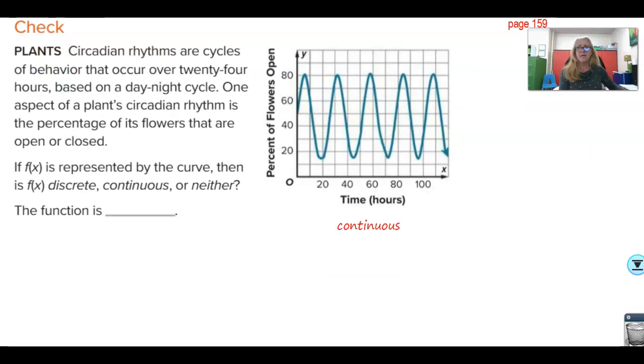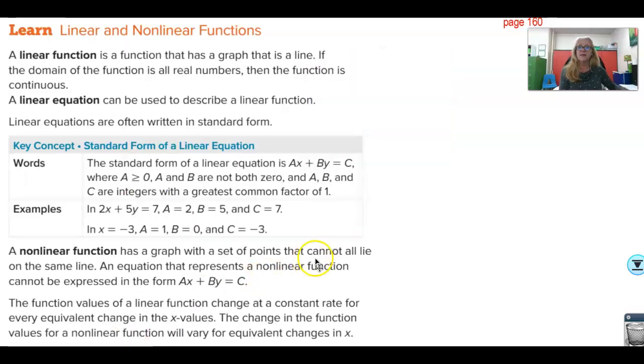Continuous intervals. Recall that a function can have a continuous interval, but the function itself is not continuous unless it is continuous over the entire domain. So, you can have continuous pieces, but you will not say this function is continuous unless the entire thing is continuous. If you've got these little dots, that makes it a neither. Circadian rhythms are cycles of behavior that occur over 24 hours based on a day-night cycle. If f(x) is represented by the curve, then is f(x) discrete, continuous, or neither? This is continuous because all the points are connected by this curved line. So far, so easy, right?